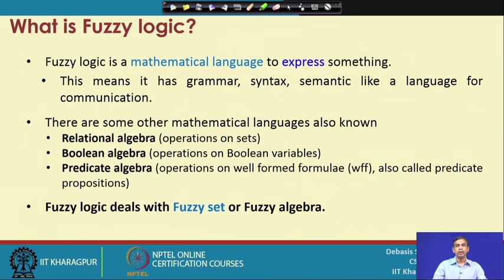The elements on which fuzzy logic depends are called fuzzy sets, and it is alternatively called fuzzy algebra. Another interesting fact is that fuzzy logic essentially combines different algebras — like relational algebra, Boolean algebra, and predicate algebra — together. So it is basically a mixture of different mathematical languages to define a new language, which is fuzzy logic.